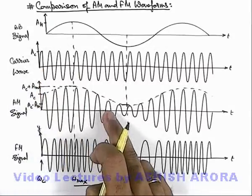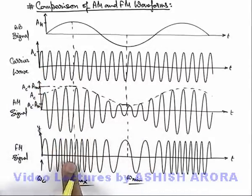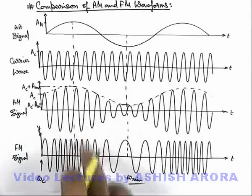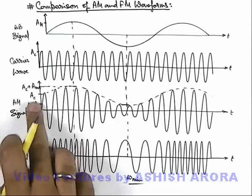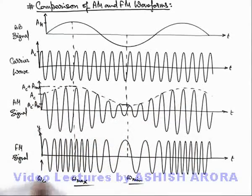So both of these waves, AM wave as well as FM wave, contain the complete information of baseband signal. AM wave in form of amplitude, FM wave in form of frequency.